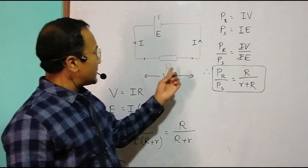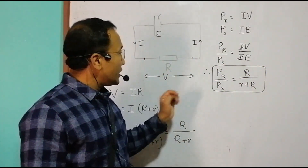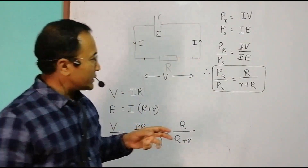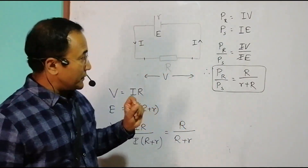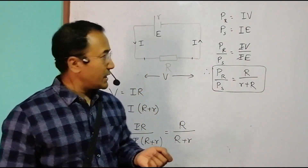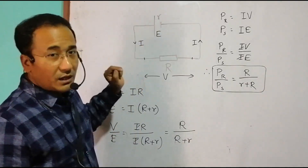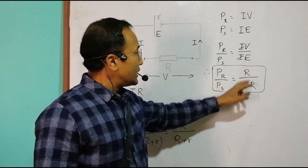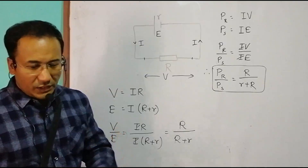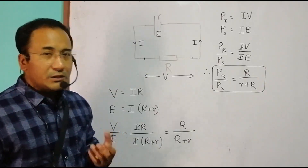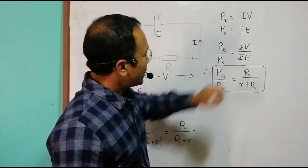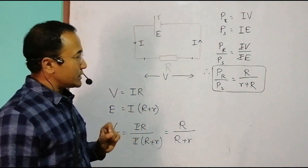So the more R is, the more power goes to the resistor. The less R is, the less power goes to the resistor. Especially when the battery is being discharged, the internal resistance r becomes larger, so this ratio becomes smaller — that is why the power in the resistor starts to decrease. The power through the resistor equals large R divided by the total resistance of the circuit.